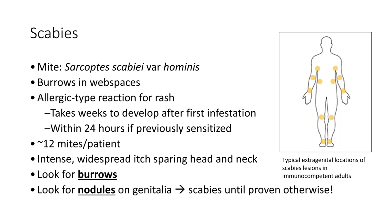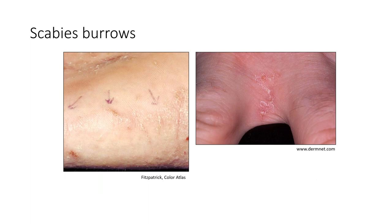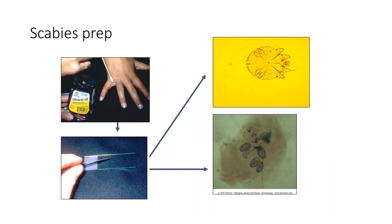Scabies causes intense widespread itch that typically spares the head and neck — if someone complains of itch on the head and neck while immunocompetent, scabies becomes much less likely. Common locations outside the genital area include wrists, elbows, axilla, waist, knees, and ankles. Itchy nodules on the genital area are very characteristic of scabies. Burrows appear as red tracks in the web spaces of the fingers where the mite has traveled. A scabies prep under microscope at 10x can confirm the mite, eggs, or fecal pellets.